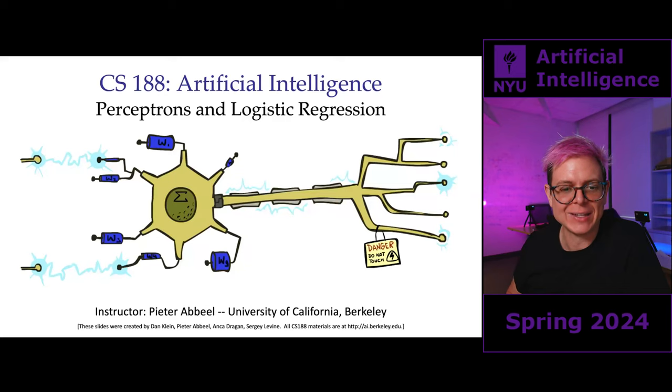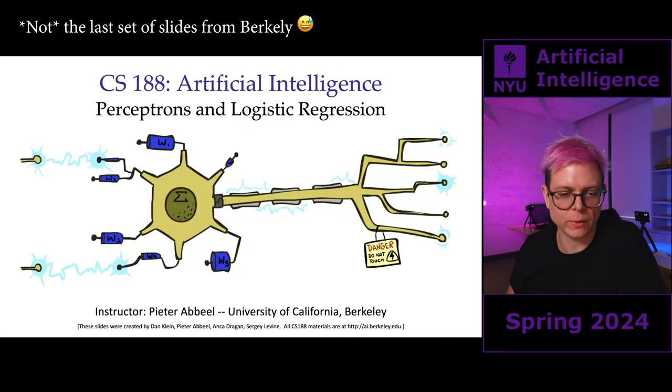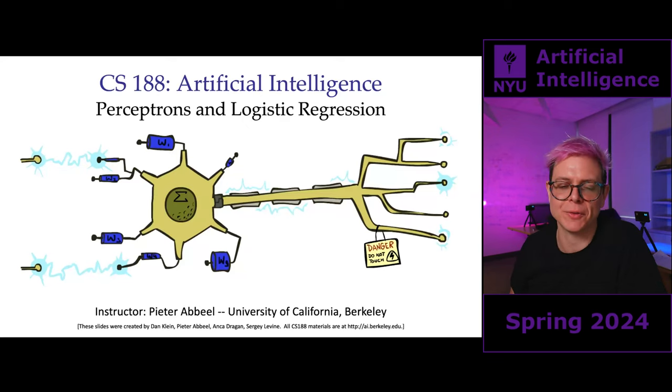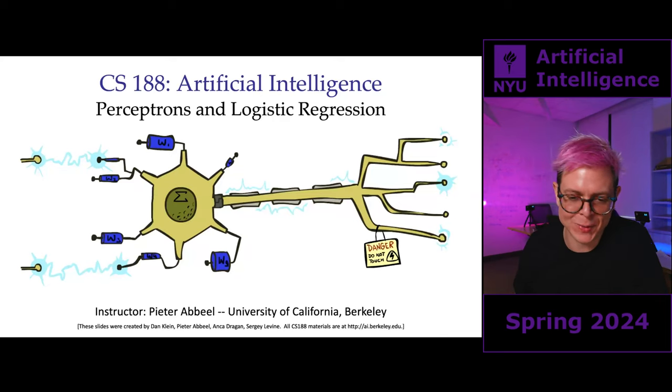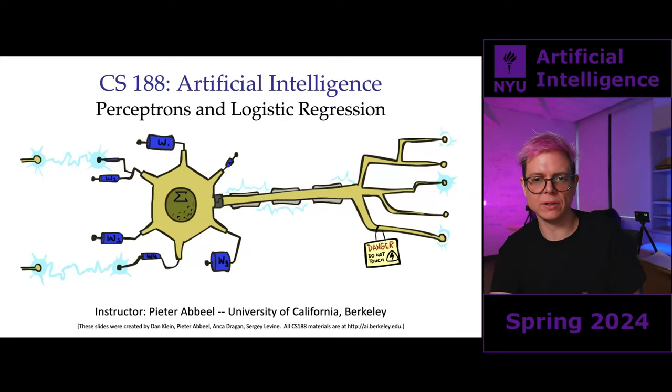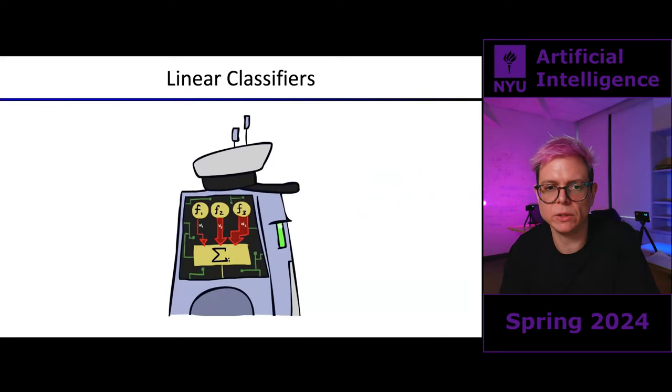Moving to actually learning weights — the same as parameters for a probabilistic model, but for a neural model. Let's start talking about neurons! These slides come from my coworker Peter at Berkeley — it's the last set of decks we're going to be using from them. Everything else will come from me. Artificial intelligence, perception, and logistic regression — let's figure out what a linear classifier is.